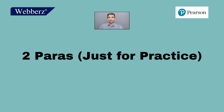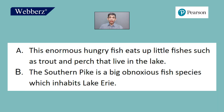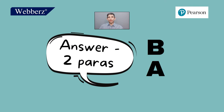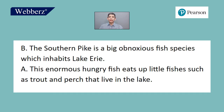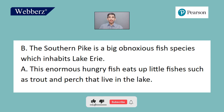Let's do two sentences now — this is just for practice. Pause the video here and try doing it yourself. Now the answers: B and A. Let's re-read the whole thing once again. The southern pike is a big obnoxious fish species which inhabits Lake Erie. This enormous hungry fish eats up little fishes such as trout and perch that live in the lake. Look at the link — 'this' connects to the first sentence.